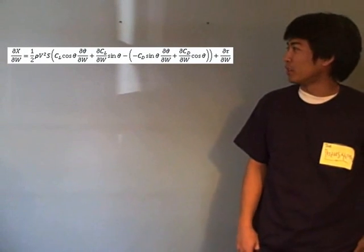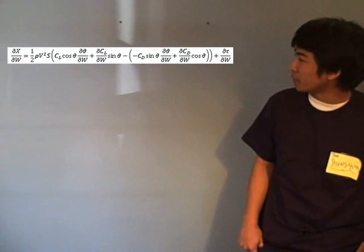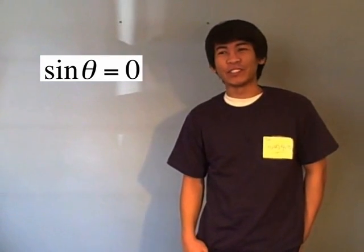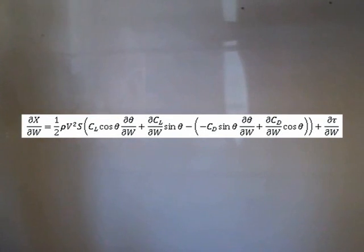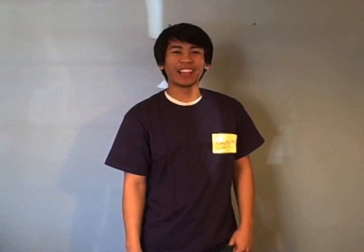Then we subtract the partial derivative of the coefficient of drag, and then we have d tau over d w. Wait, Daniel, aren't we making small angle assumptions? That's right, Drew! That means sine theta equals zero and cosine theta equals one. That means all the terms multiplied by sine theta will cancel out and equal zero, and all the terms multiplied by cosine theta will just be multiplied by one. Does the thrust vary? No, it doesn't. That means the term d tau over d w will cancel out and equal zero. Us perturbations love those cancellations — they sure make life a lot easier.